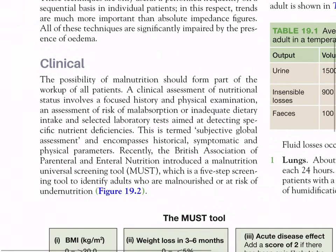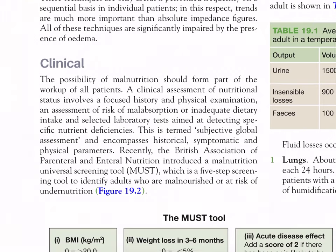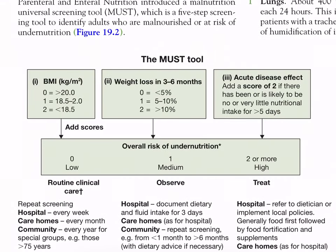Clinical assessment: the possibility of malnutrition should form part of the workup of all patients. A clinical assessment of nutritional status involves a focused history and physical examination, assessment of risk of malabsorption and inadequate dietary intake, and selected laboratory tests aimed at detecting specific nutrient deficiencies. The Subjective Global Assessment encompasses historical, symptomatic, and physical parameters. Recently, the British Association of Parenteral and Enteral Nutrition introduced the Malnutrition Universal Screening Tool (MUST), a five-step screening tool to identify adults who are malnourished or at risk of undernutrition, shown in Figure 19.2.